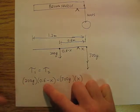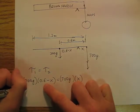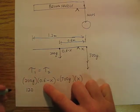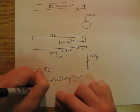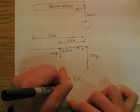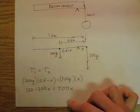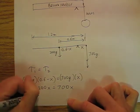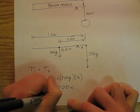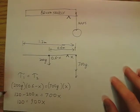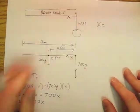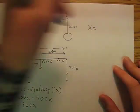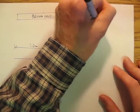So I'm going to do this out as 120 minus 200x equals 700x. So I get 120 equals 900x, and x is going to be 120 divided by 900.